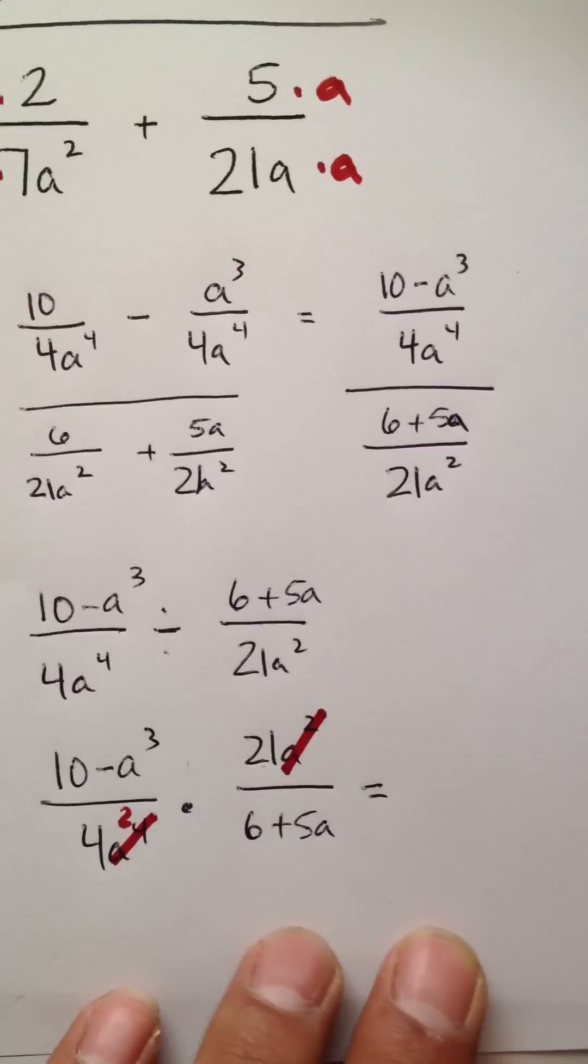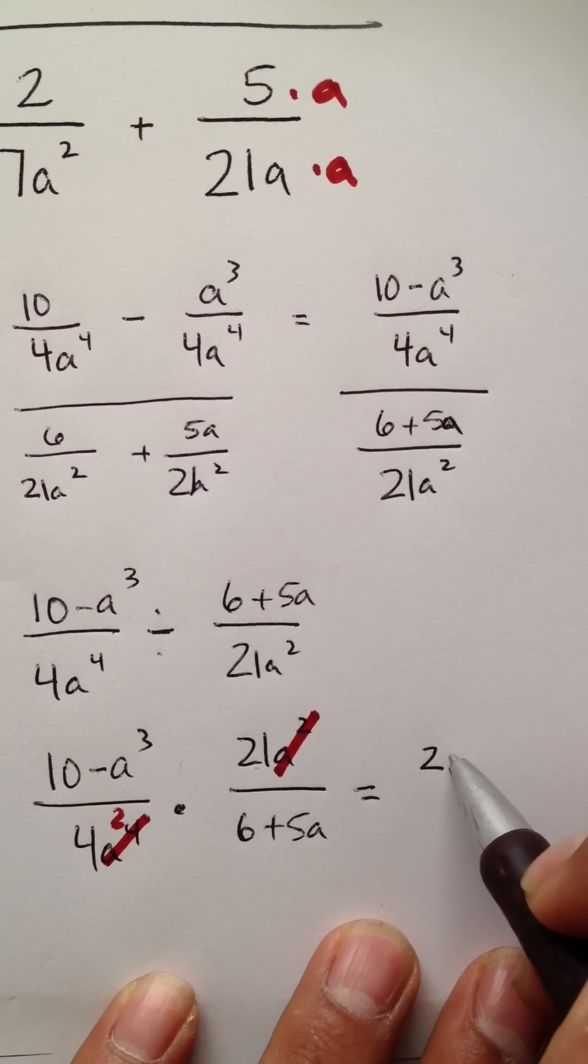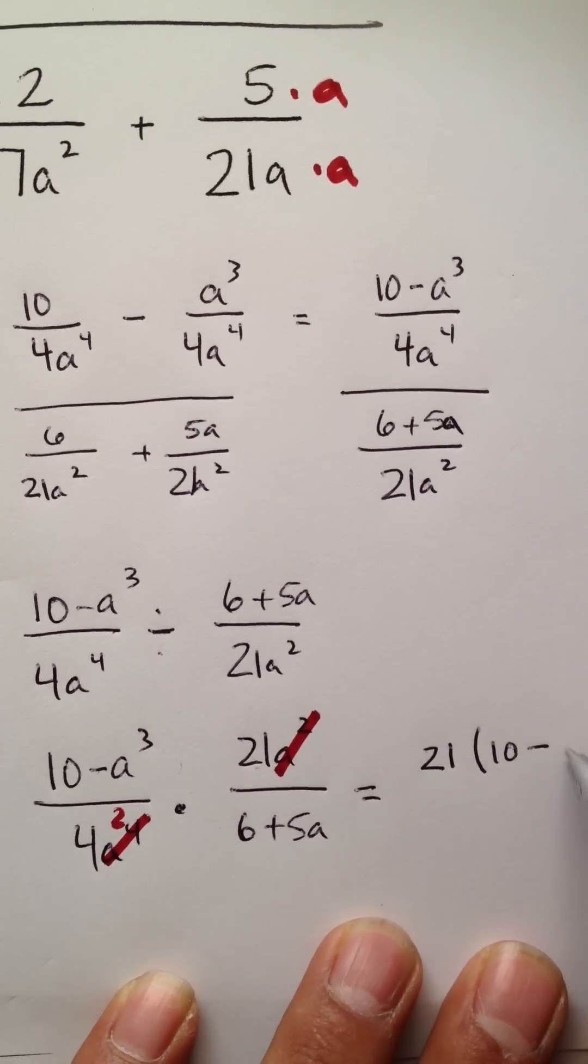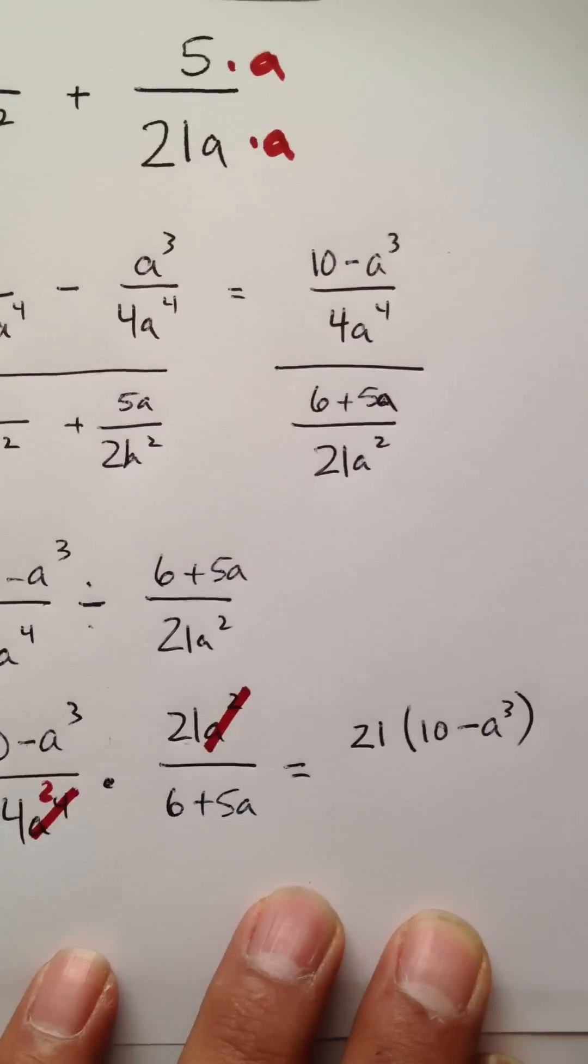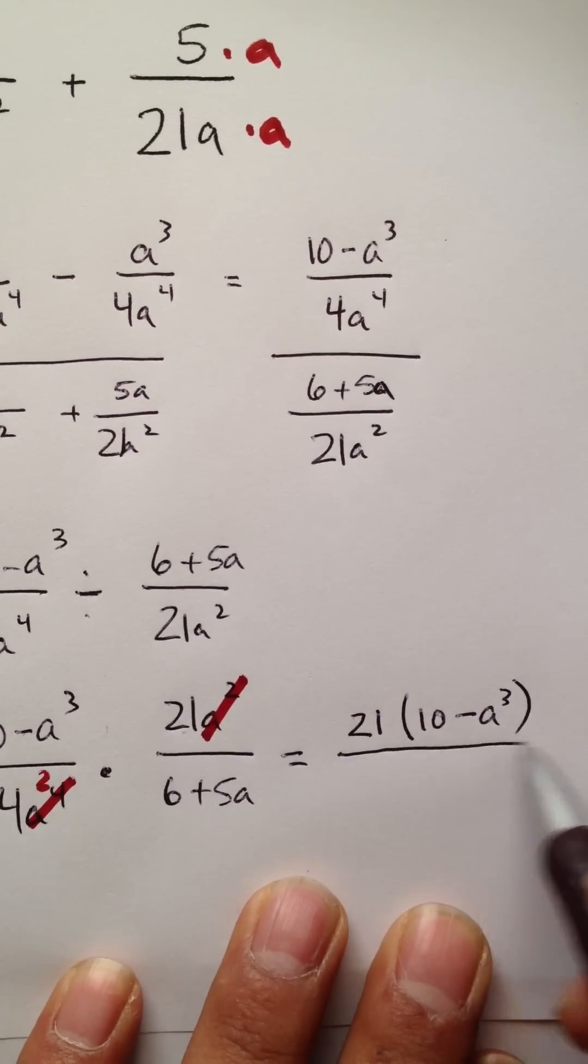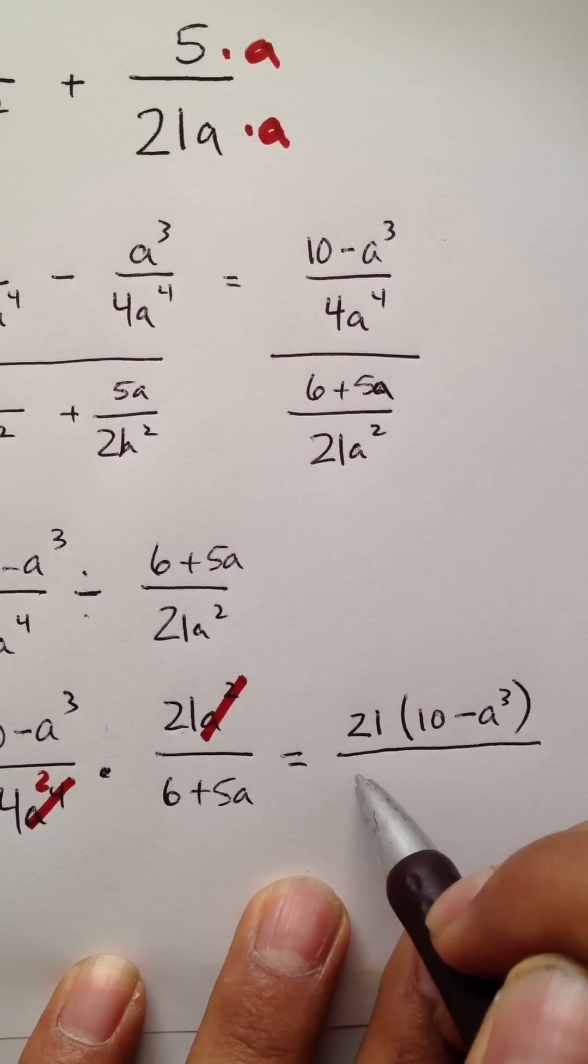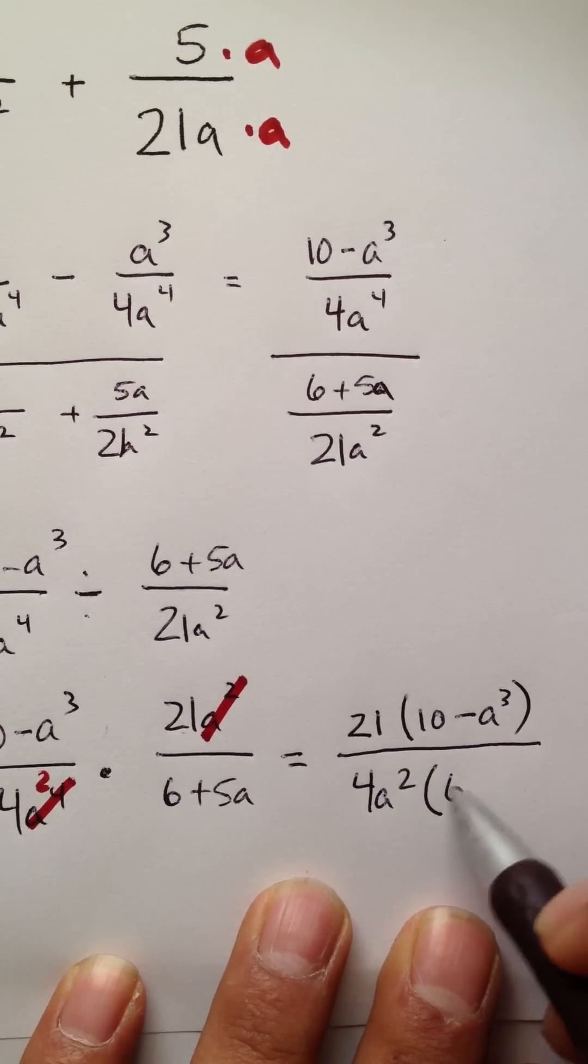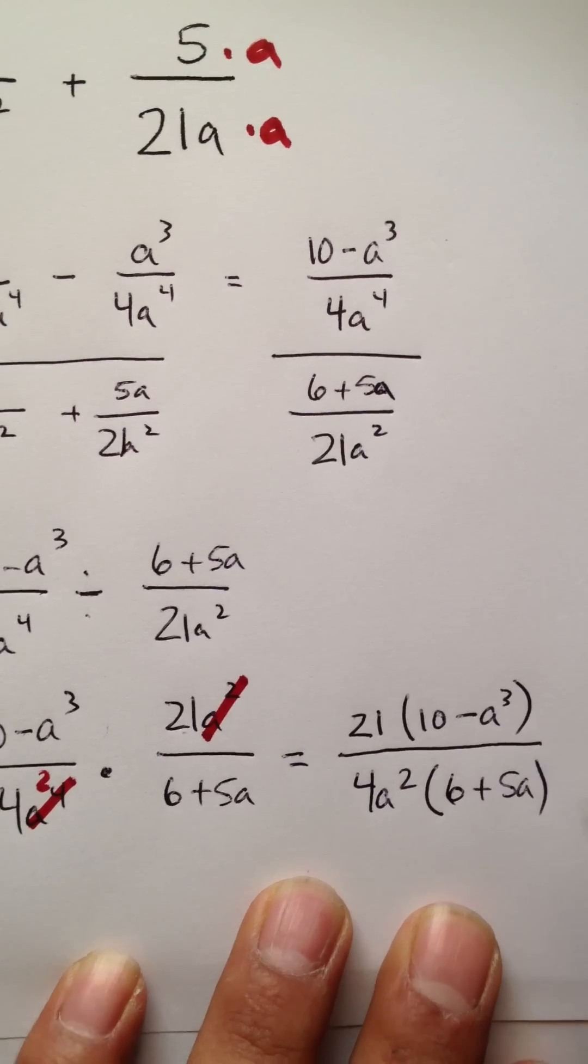And so, the most appropriate answer for this would be 21 times 10 minus a to the third power, sorry, all on top of 4a squared times the quantity 6 plus 5a.